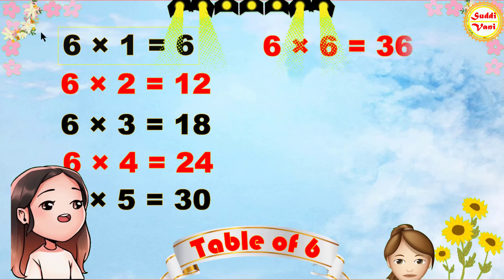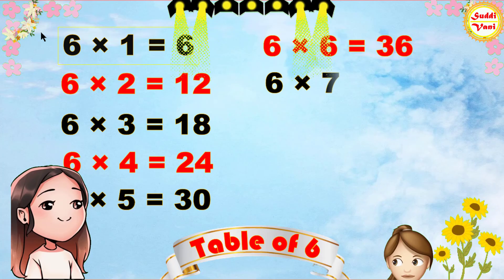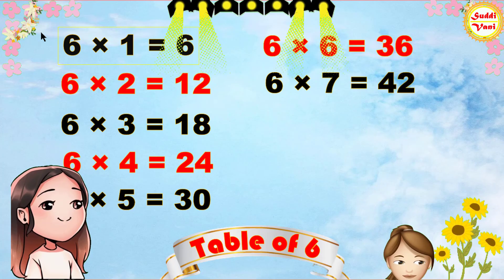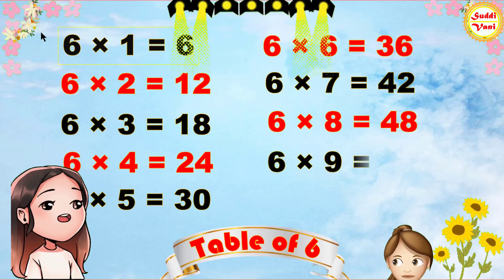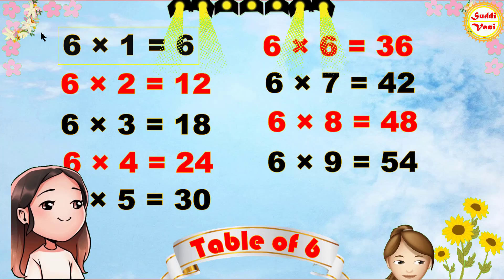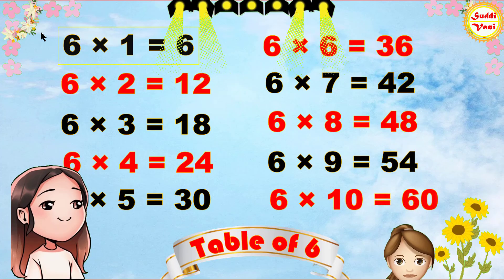Six sixes are thirty-six, six sevens are forty-two, six eights are forty-eight, six nines are fifty-four, six tens are sixty.